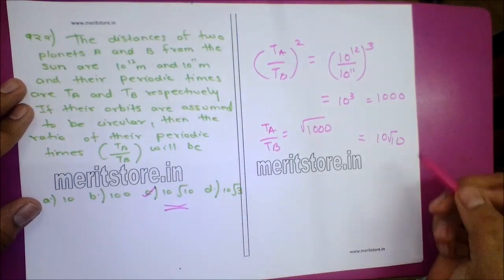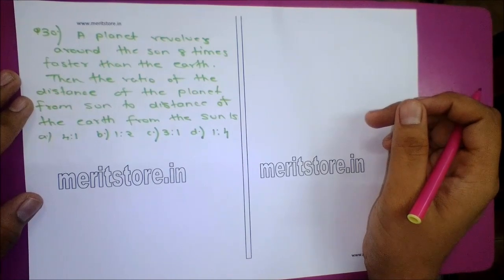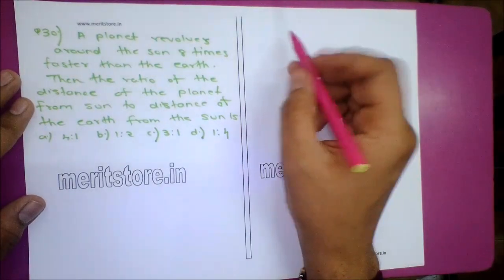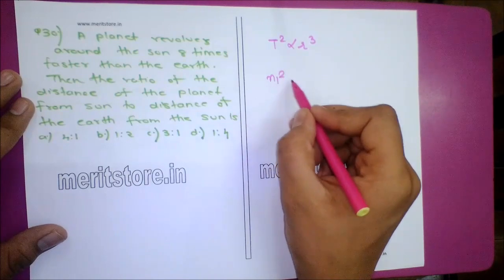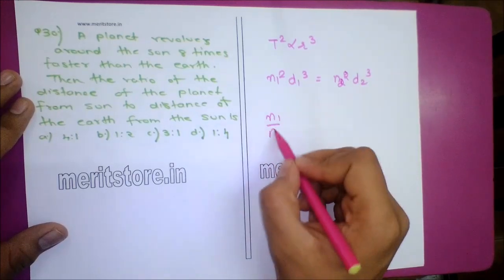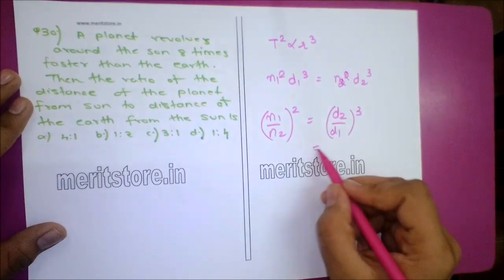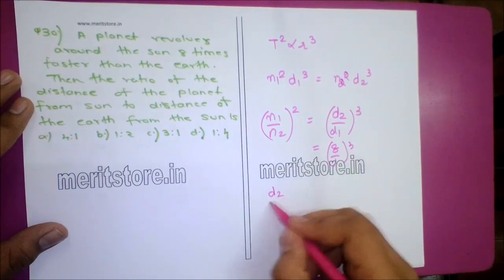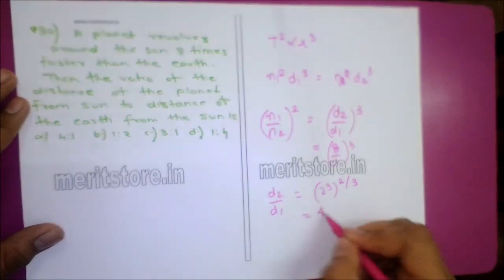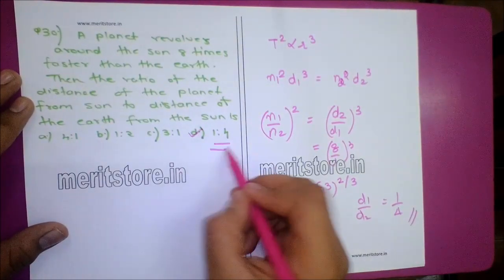Question 30: A planet revolves around the Sun 8 times faster than the Earth. What is the ratio of the planet's distance to the Earth's distance from the Sun? Since T² ∝ R³ and N² ∝ 1/R³, we get (N1/N2)² = (D2/D1)³. So (8/1)² = (D2/D1)³, giving D2/D1 = (64)^(1/3) = 4. Therefore D1/D2 = 1/4. Option D is the correct answer.